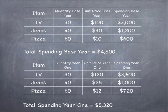To find the spending for the base year, we multiply the quantity times the unit price. So 30 times 100 gives us 3,000 for TVs. 40 times 30 gives us 1,200 for jeans. 60 times 10 gives us 600 for pizza, for a total spending in the base year of 4,800.